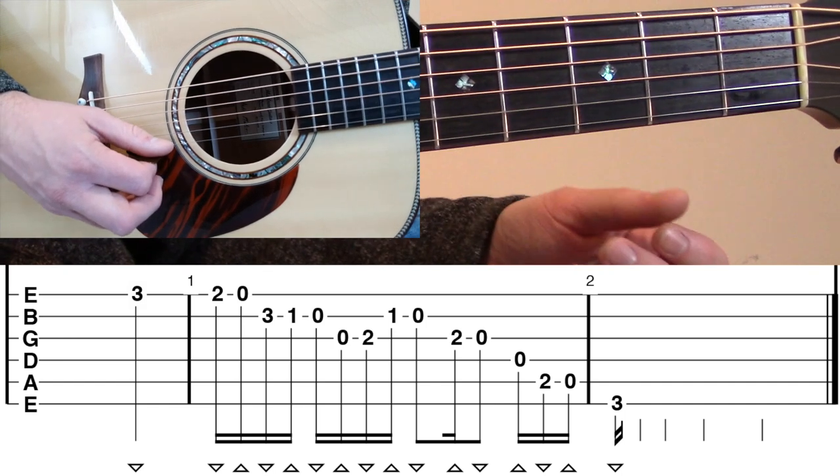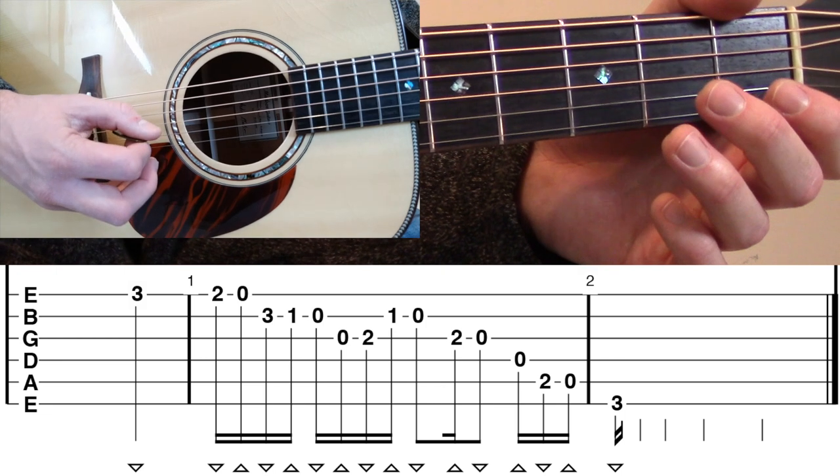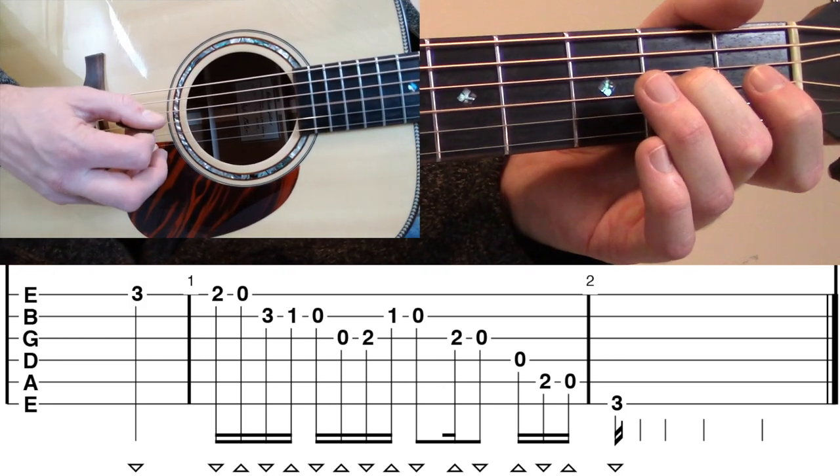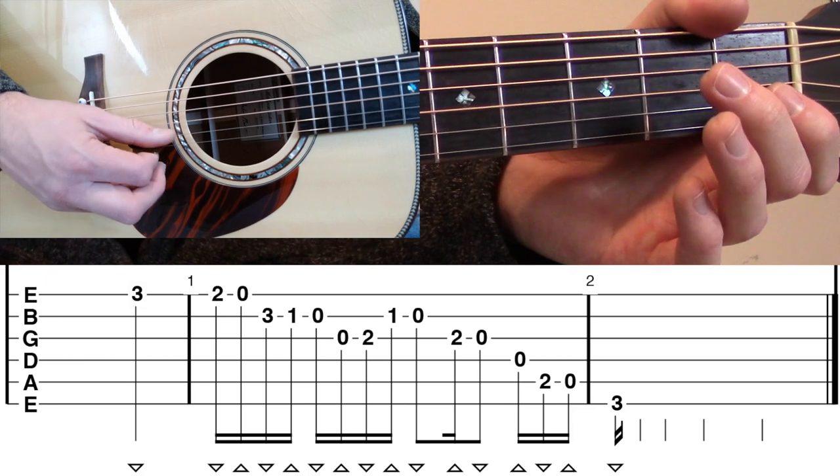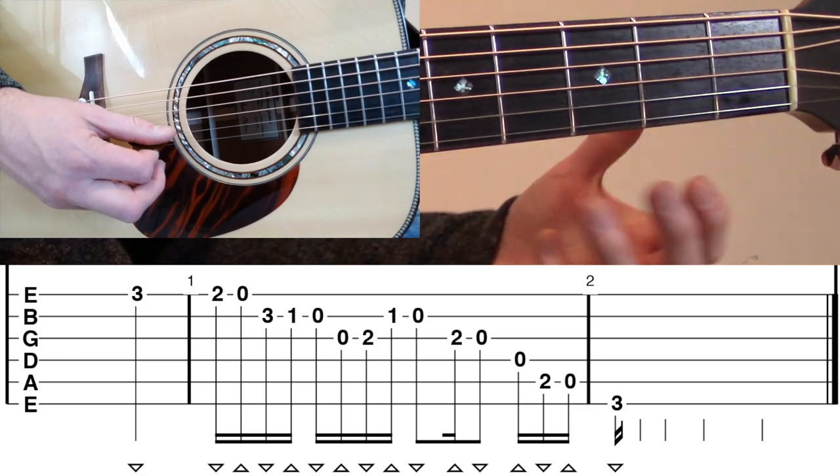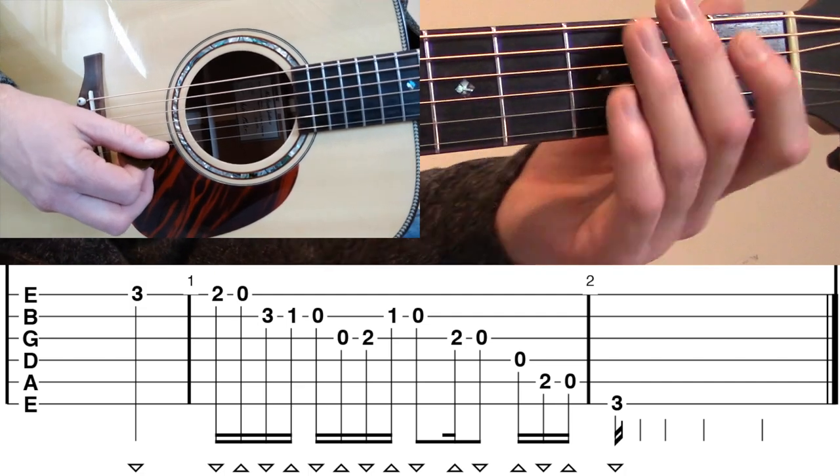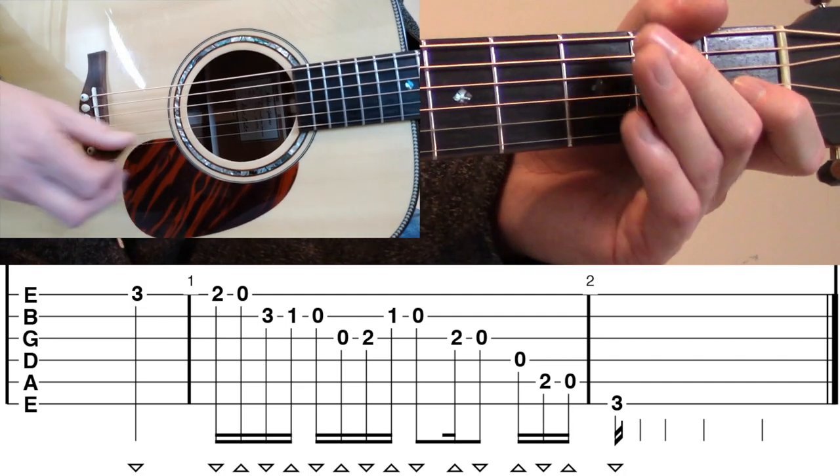Okay, that open B there, that's on an eighth note, and then after that we're going to go second fret G on an upstroke to open G. That open G is on an eighth note as well, so we have a little bit of a break in that kind of sixteenth note line that we've been playing.